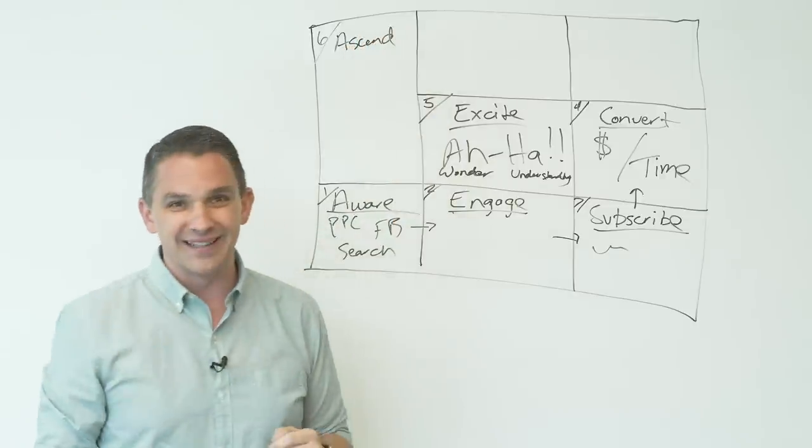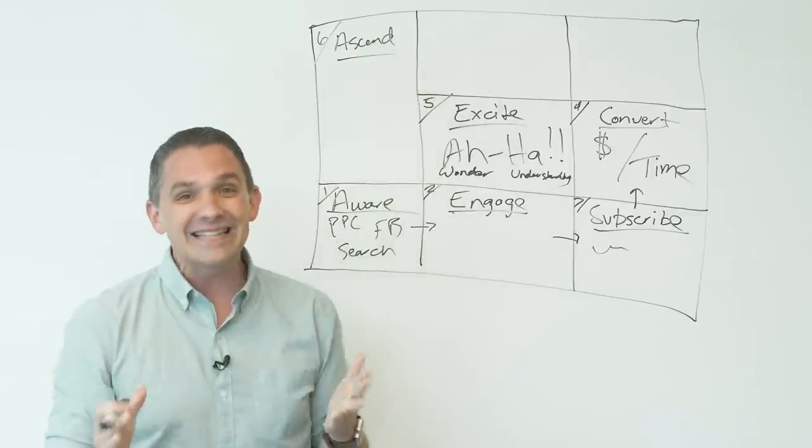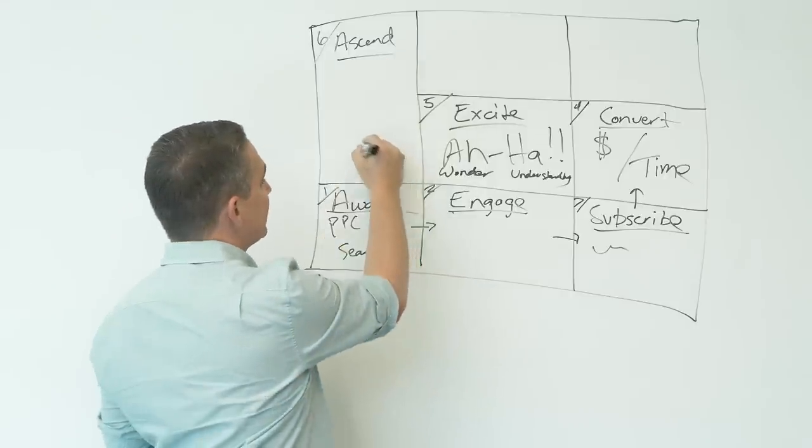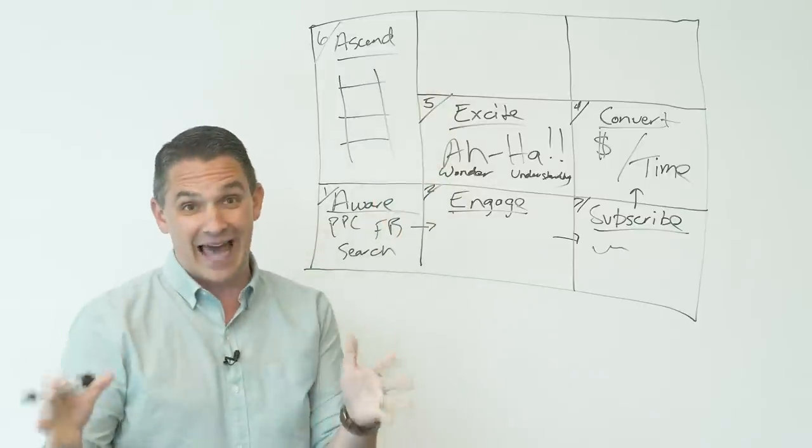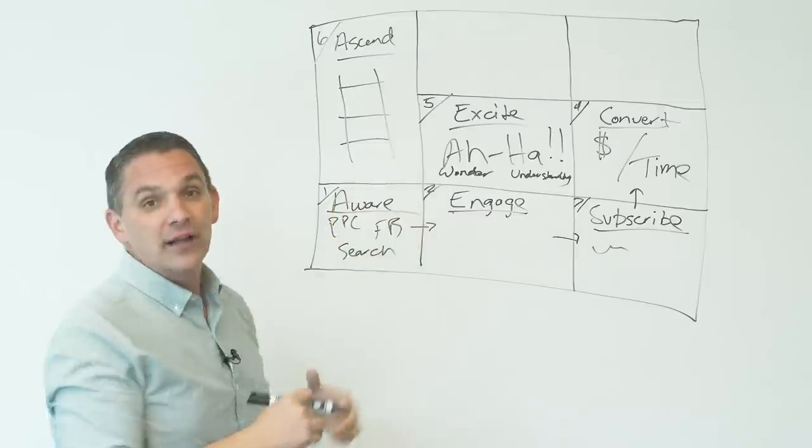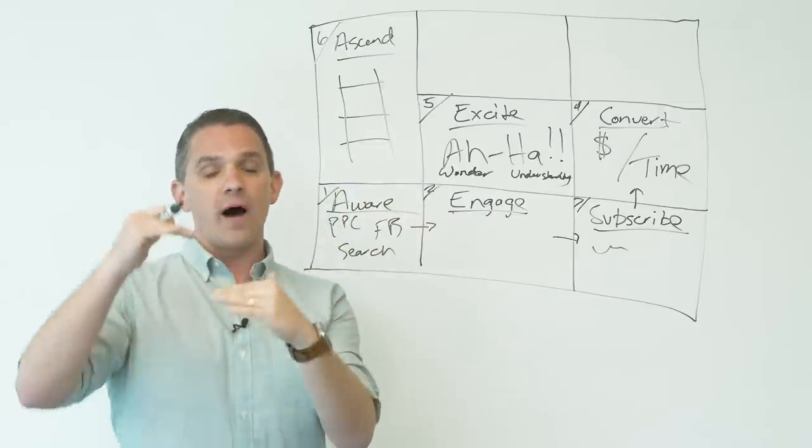The idea of the ascend stage, the reason that we visualize this as taller is because ideally the ascend stage has multiple levels. We like to visualize the ascend stage as a ladder. So generally they're going to enter in by buying a lower price offering and maybe you have higher ticket products as they move up the ladder.